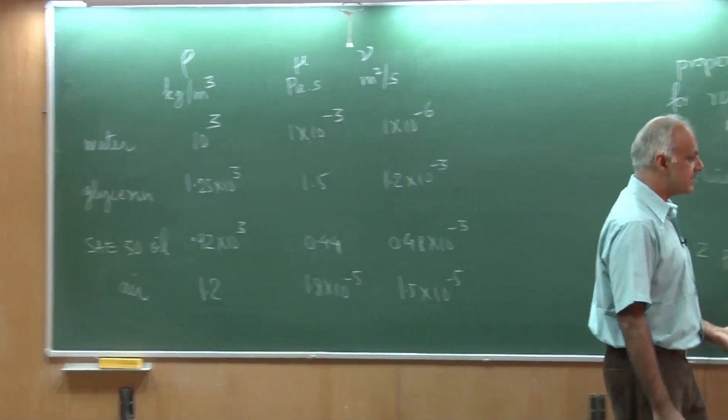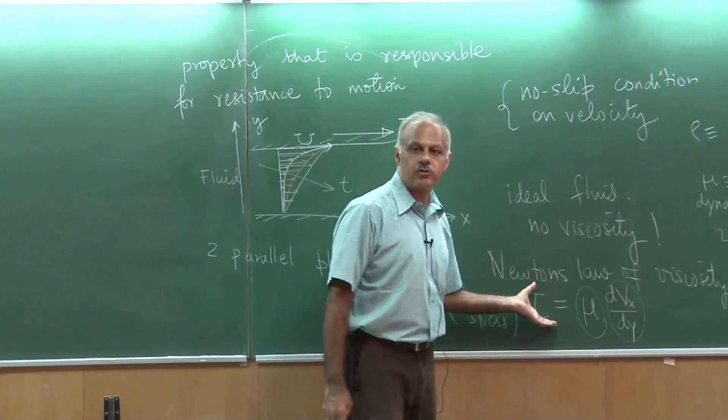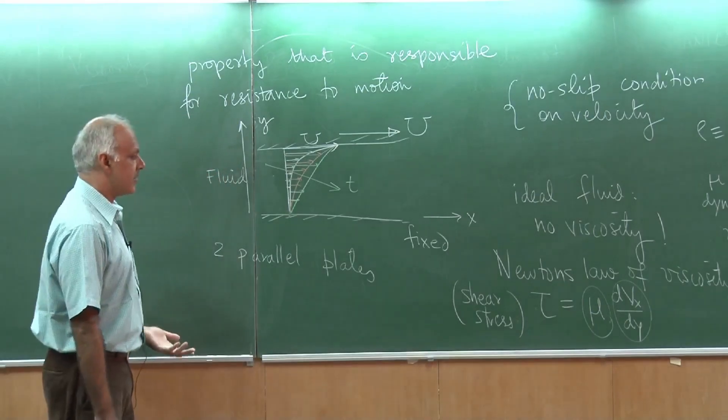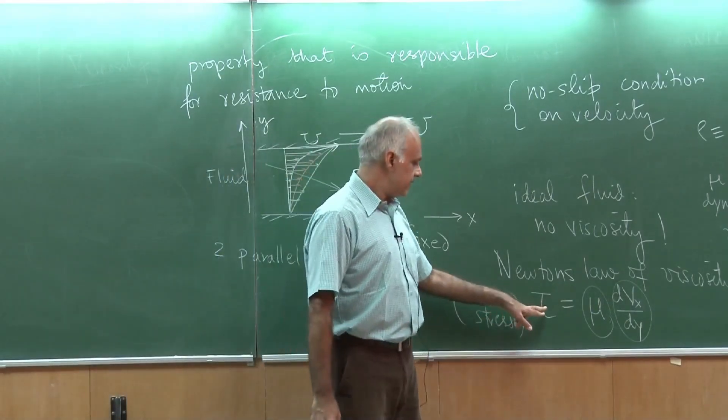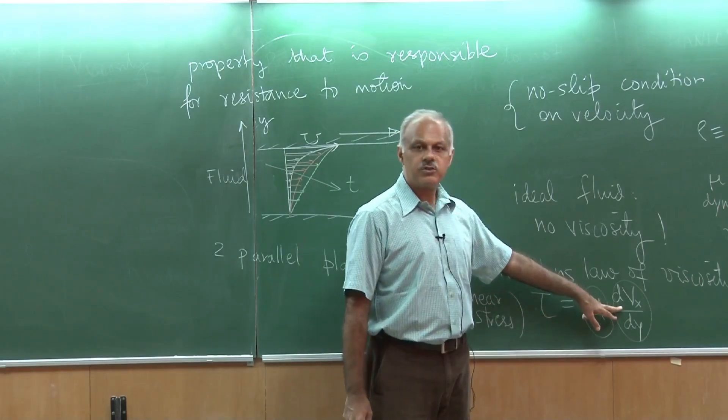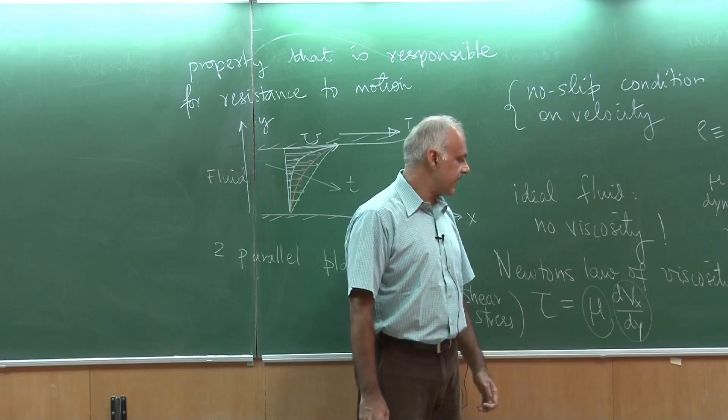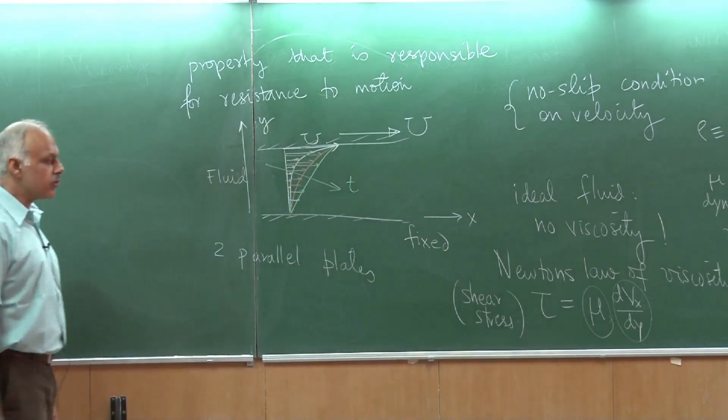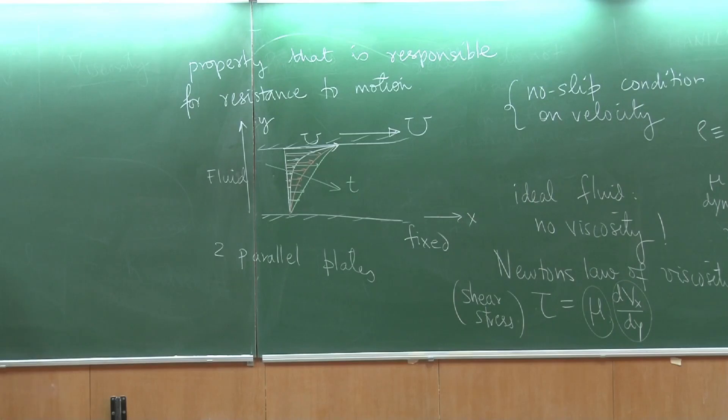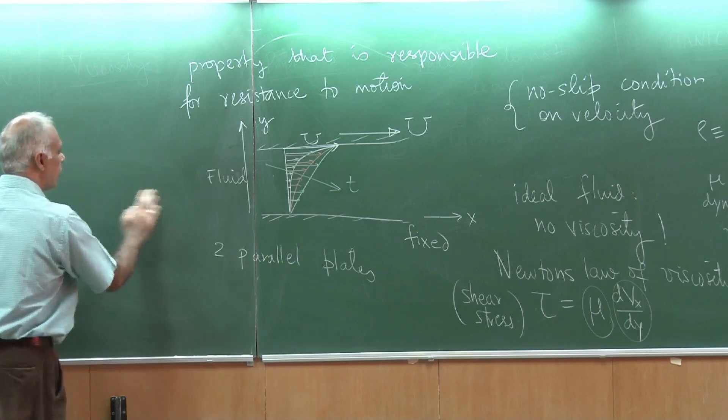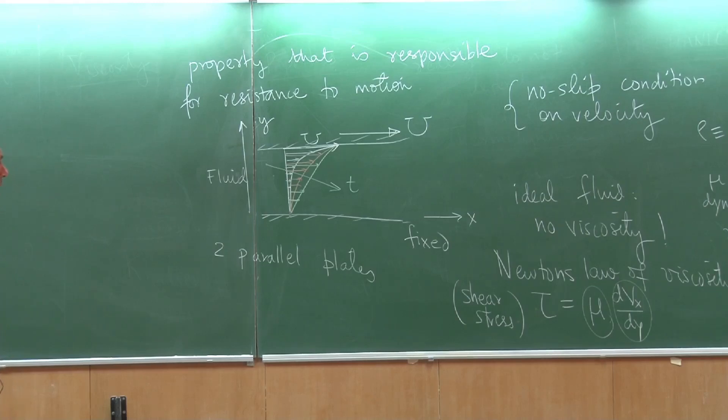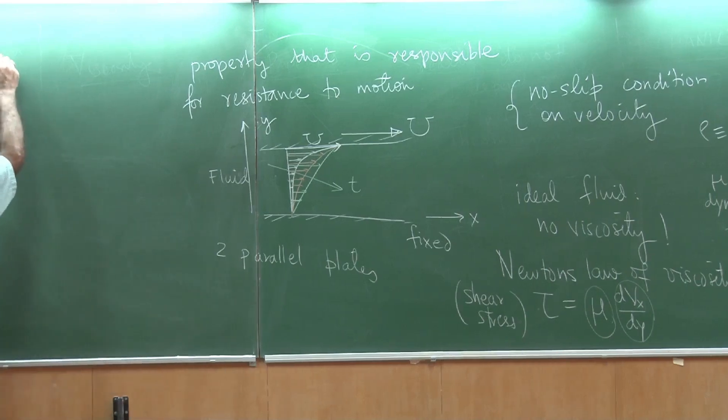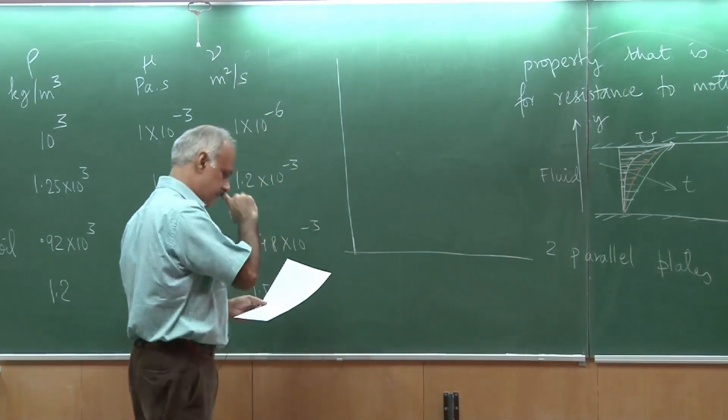This Newton's law of viscosity is essentially for a very special class of fluids. And these fluids are called Newtonian fluids. And here the idea is that the shear stress is directly proportional to the velocity gradient. You can see, this is velocity, the derivative with y, so we call it the velocity gradient. But there are fluids in which the relationship may not be linear. It may be non-linear. And there are many such interesting fluids. Let me give you an overview, because it is very difficult to do the analysis for those fluids in this course. Nevertheless, I want to give you at least a picture of.